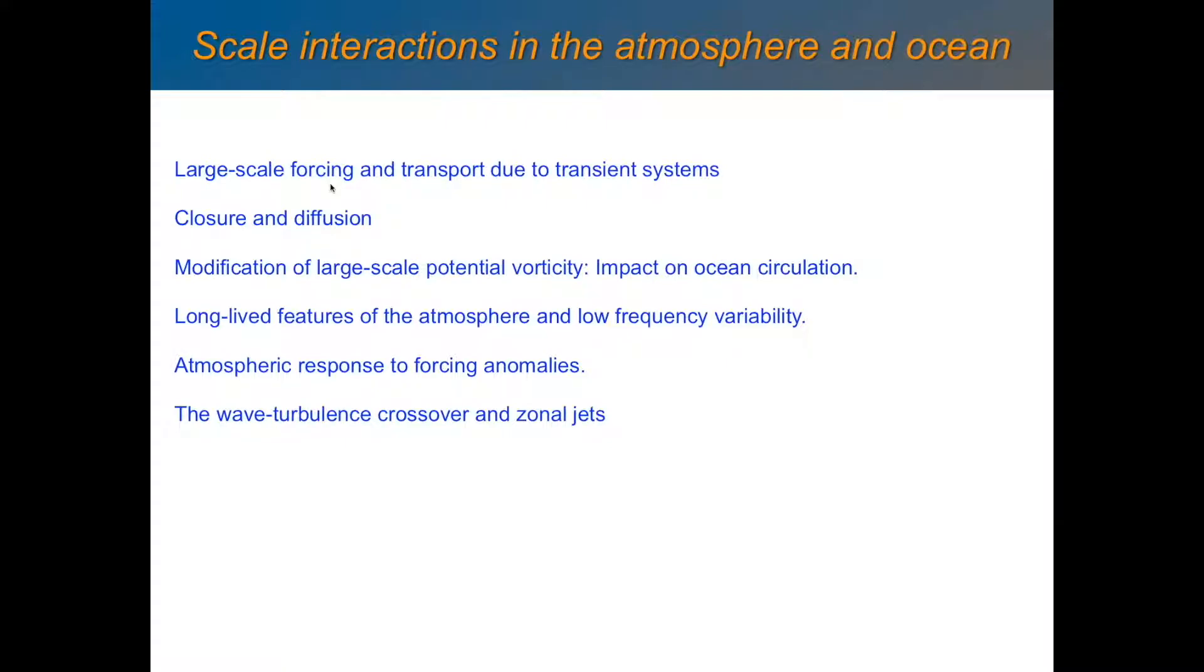One of the important things to talk about is closure and diffusion. If you can't represent every single little transient system, is there some systematic way of representing their aggregate effect, the statistical effect on the average flow? Can that effect be represented in terms of lower frequency variations or average flow? One simple approach to closure is to consider these transient systems as a form of diffusion. You have gradients in the mean flow and you think of these transients as diffusing or eroding, eliminating these gradients, just the way ordinary diffusion would. In that way, they can modify the large-scale potential vorticity. We'll look at how it changes the ocean circulation.